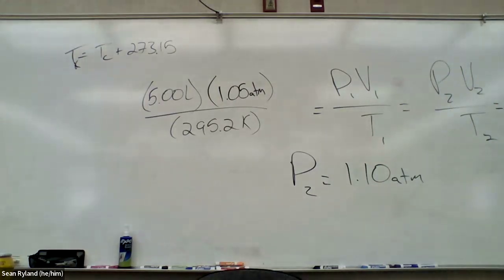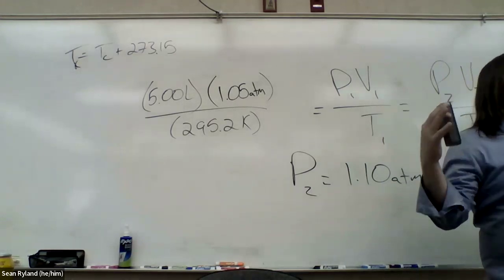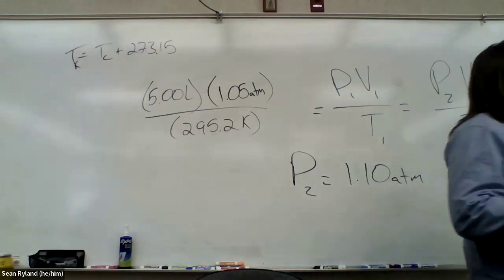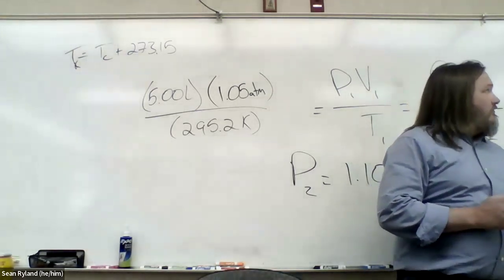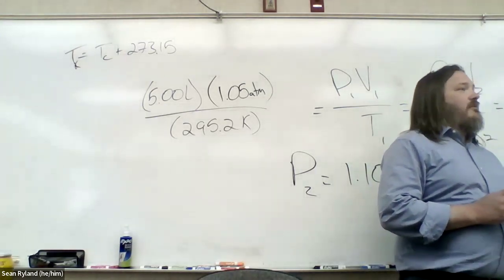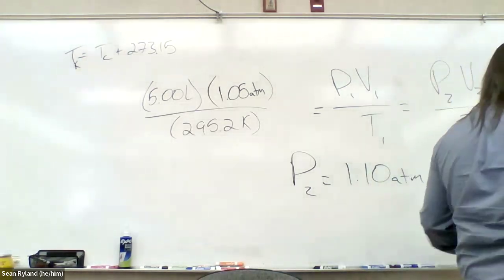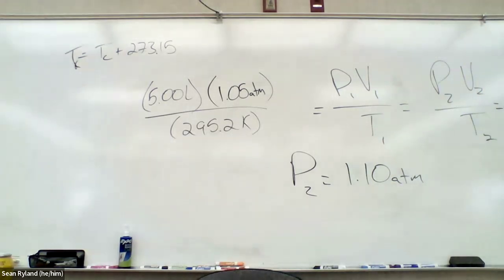What do we get for our final pressure? So 5 times 1.05 over 295.2 times 313.7, I get 1.10 atmospheres. Just plug and chug, right? Mathematically, it's not too tricky if we can do the algebra. And luckily, the nice thing about gas laws is other than converting into Kelvin, it's even pretty simple algebra. We don't even have to mess with order of operations because everything is multiplication and division.